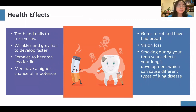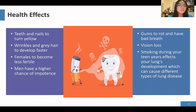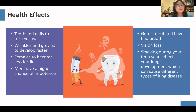What are the different health effects from smoking? Cancer is the most common tobacco-caused disease. Beyond that, your teeth and nails will turn yellow, wrinkles and gray hair develop faster — overall, you age faster. Smoking causes fertility problems in both men and women: females become less fertile, and men have a higher chance of impotence. Your gums start to rot and you have bad breath; chemicals in cigarettes are destroying your mouth, so mouth and oral cancer are not an exception. Smoking will also weaken your eyes — you may lose your vision if you continue to smoke. Smoking during your teen years affects your lungs' development, which can cause different types of lung disease. In short, smoking has zero benefits to us, so it's better to quit today.